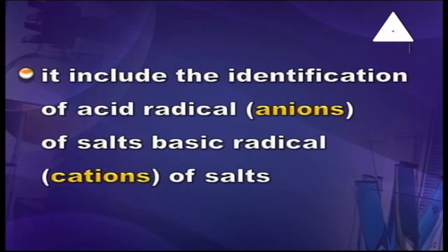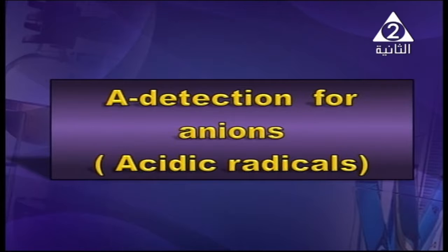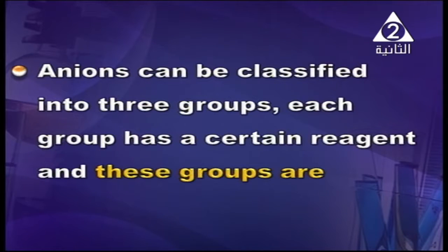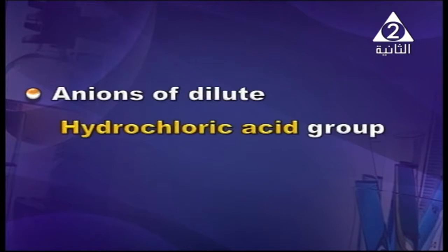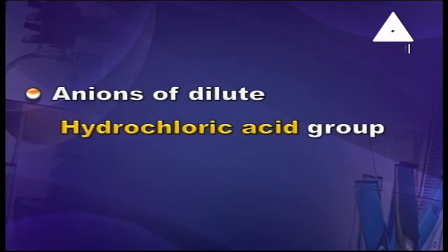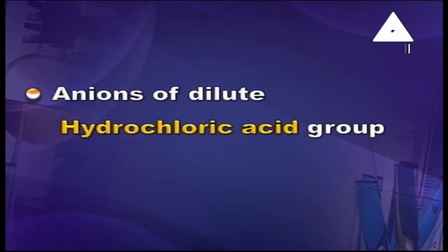Acid is for the negative, basic is for the cation — positive. What does this mean? Chemical analysis. What about making detection of the anion of the acid radical? Acid radical means I work through negative. Anion can be classified into three groups — acid radicals — and each group has a certain reagent. These groups are: first, the anion of dilute hydrochloric acid. This group is especially for hydrochloric acid; the reaction depends on HCl only.